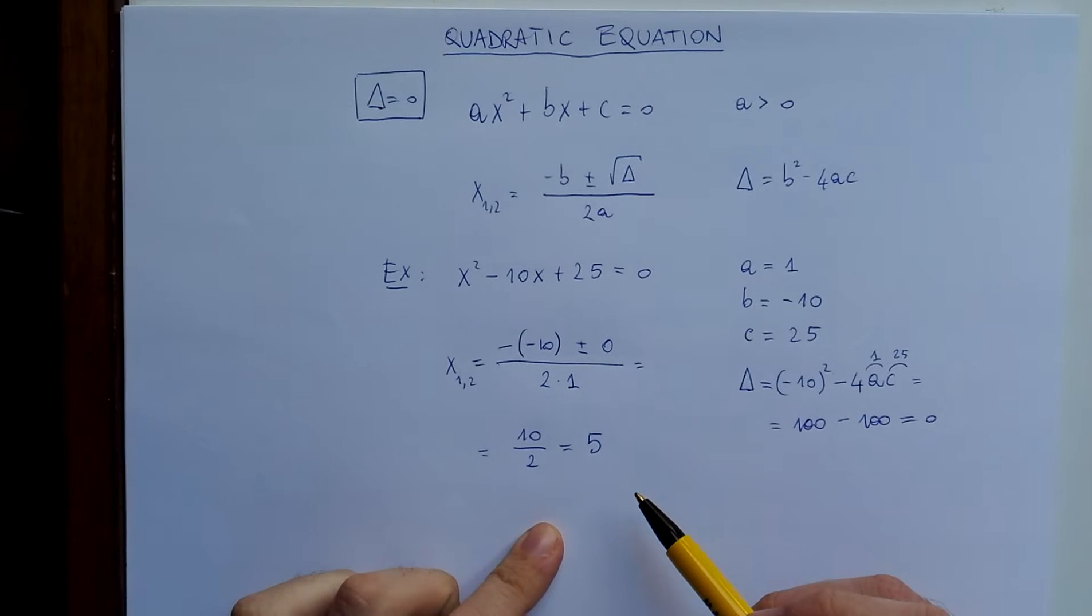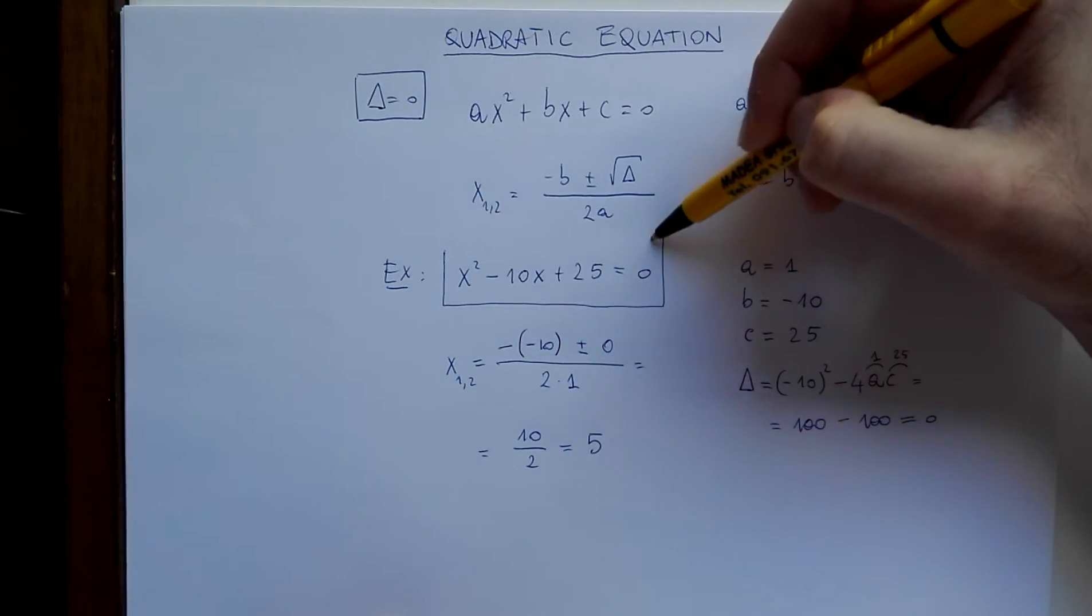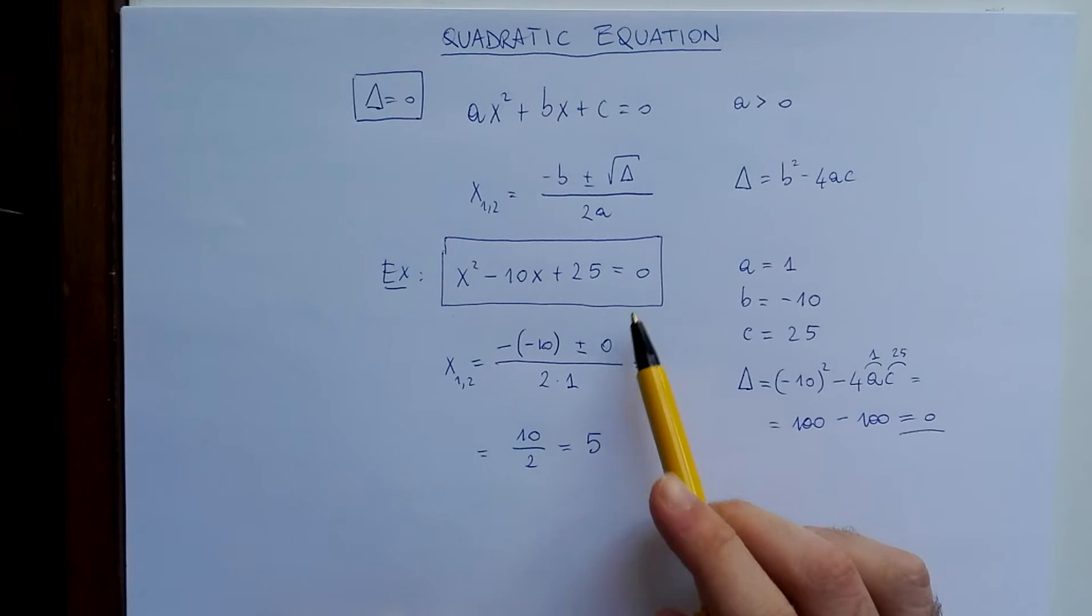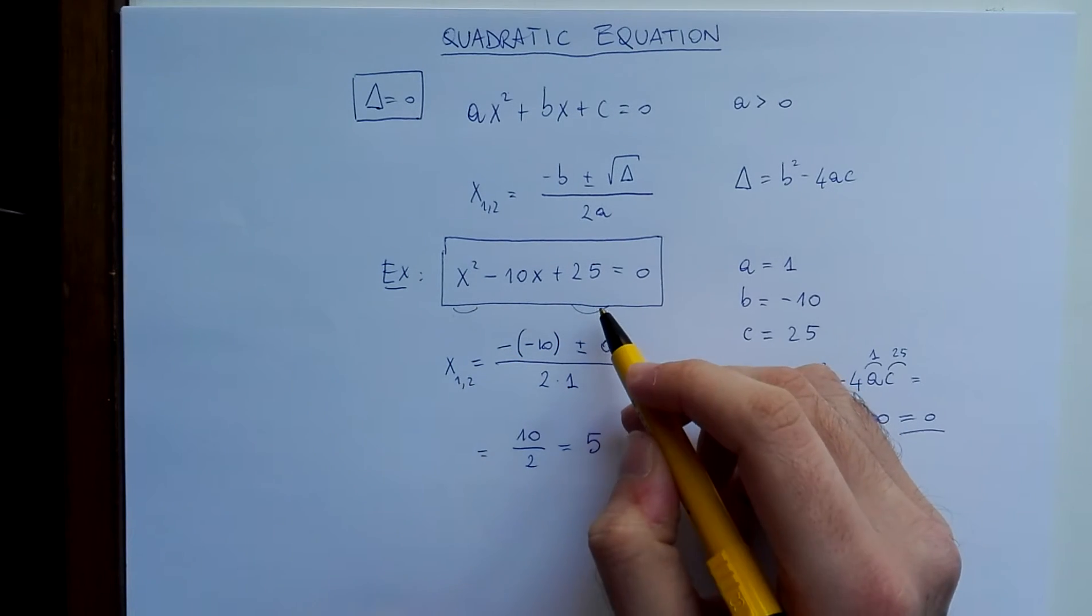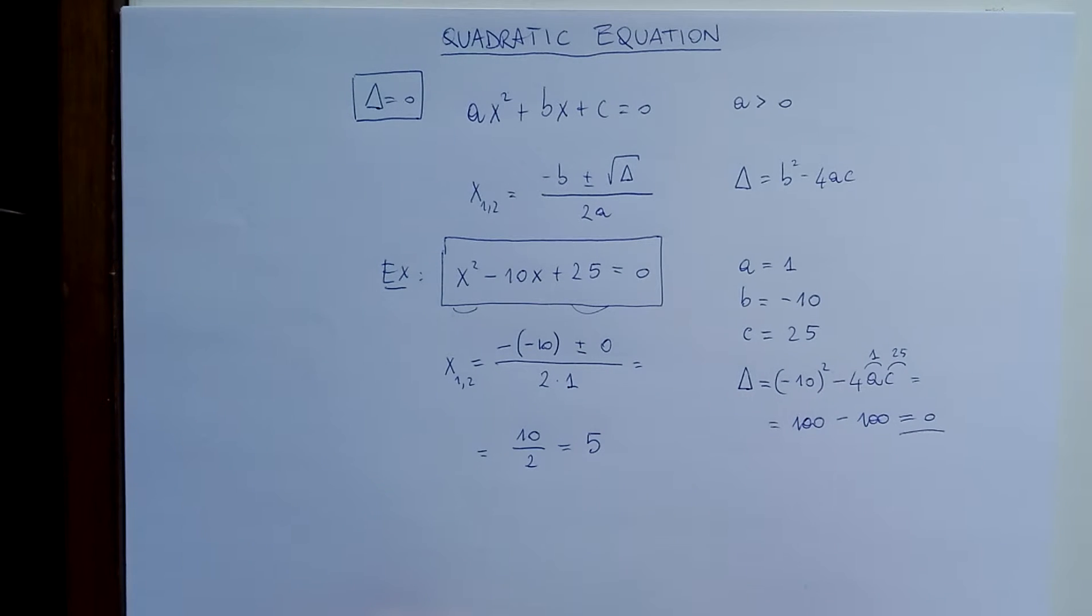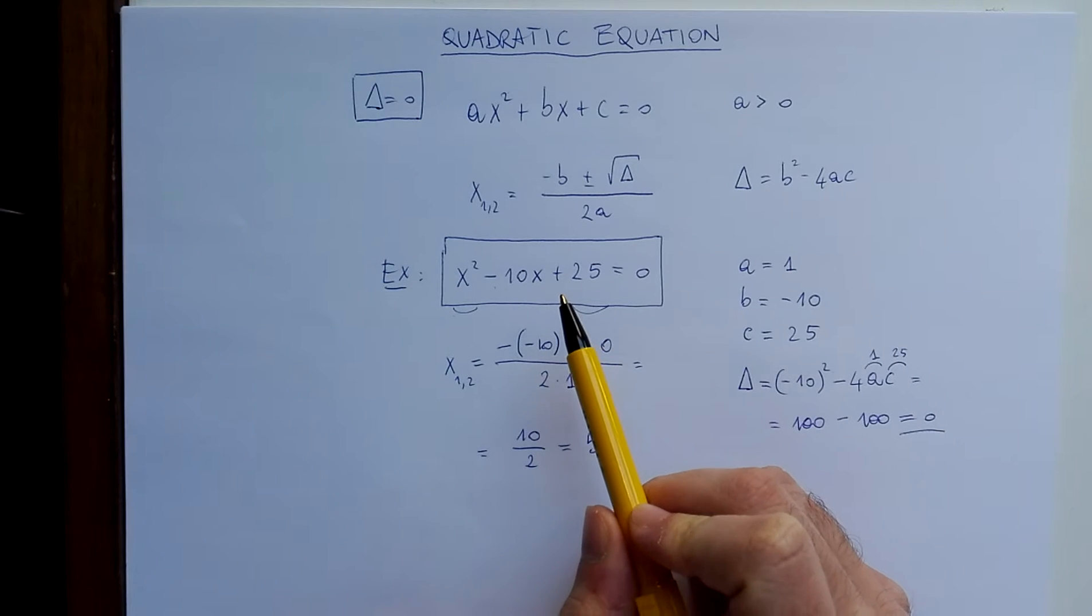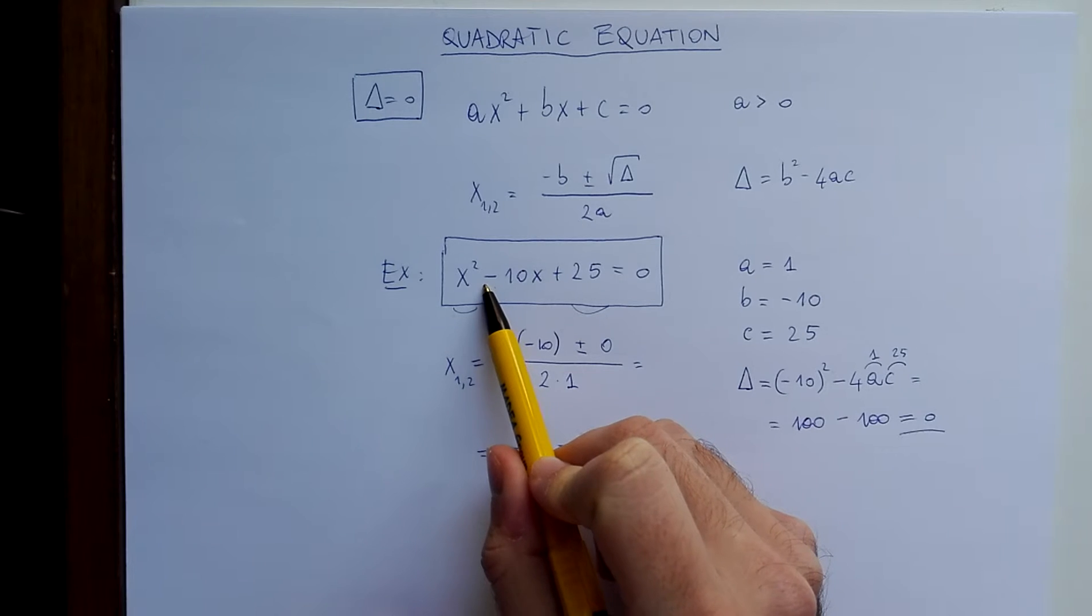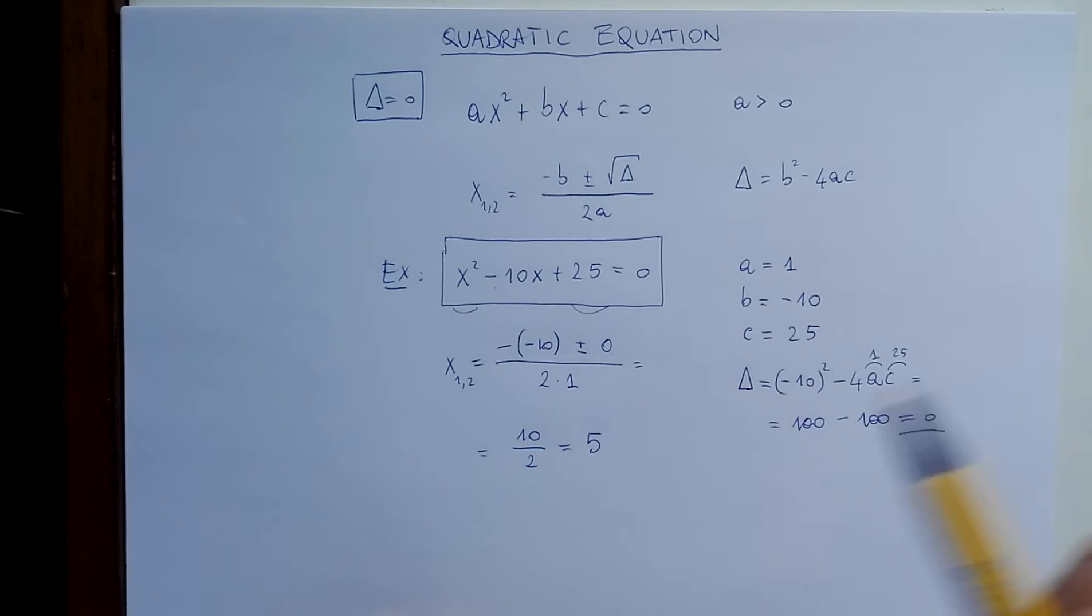We could have seen this in another way. If you look carefully, you see that a quadratic equation with delta equals zero is a square. You can see that because x squared is the square of x, 25 is the square of 5 and minus 5. So we should only check if the term in the middle is the double product of x and 5 or x and minus 5. Since we have a minus here, then we see that this is the product of x and minus 5 times 2.